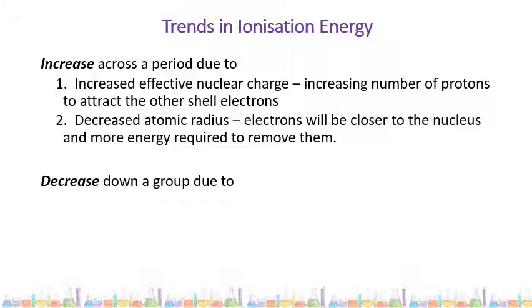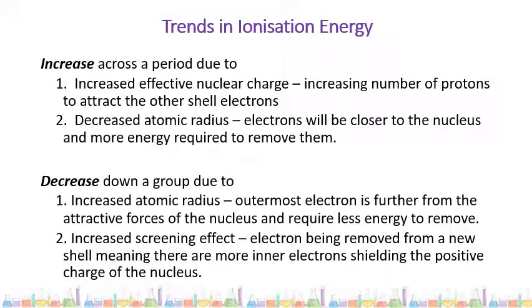We also see a decrease down a group for ionization energy. This is due to the increased atomic radius — the electron we're going to be removing is further away from the attractive force of the nucleus, so it will require less energy to remove. There's also an increased screening effect as you go down a group, meaning the inner electrons are shielding the positive charge of the nucleus from the electron we want to remove, making it easier to remove and requiring less energy.